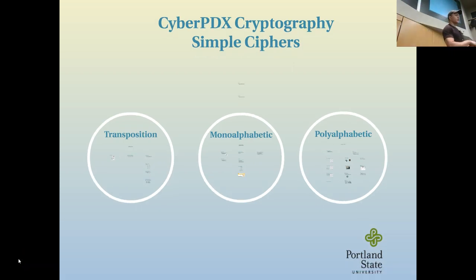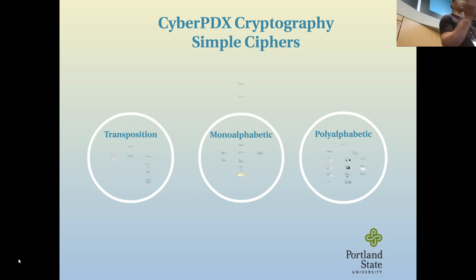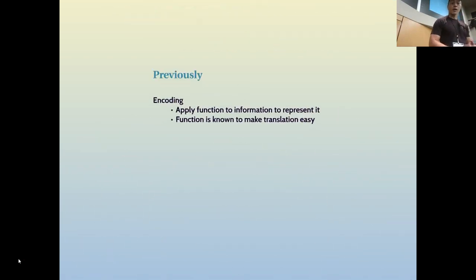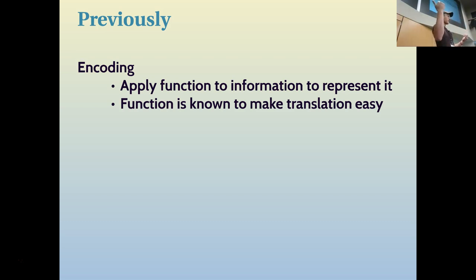Today we're going to start looking at simple ciphers. Yesterday we looked at encoding messages — how messages are represented in the digital domain. We're on our way to retrace some of the steps that Elizabeth Friedman took to break messages in both world wars. Yesterday was about encoding: applying a function to your information, like your characters, to generate the representation of the data.